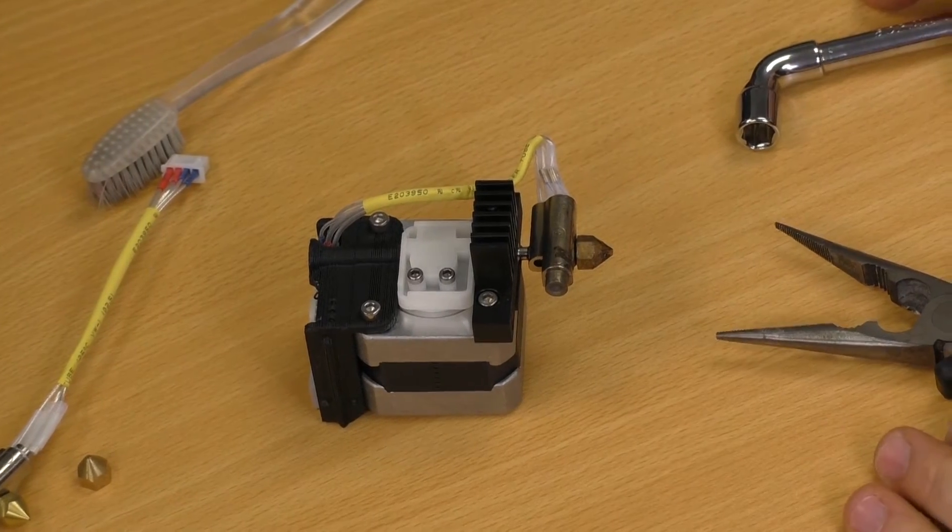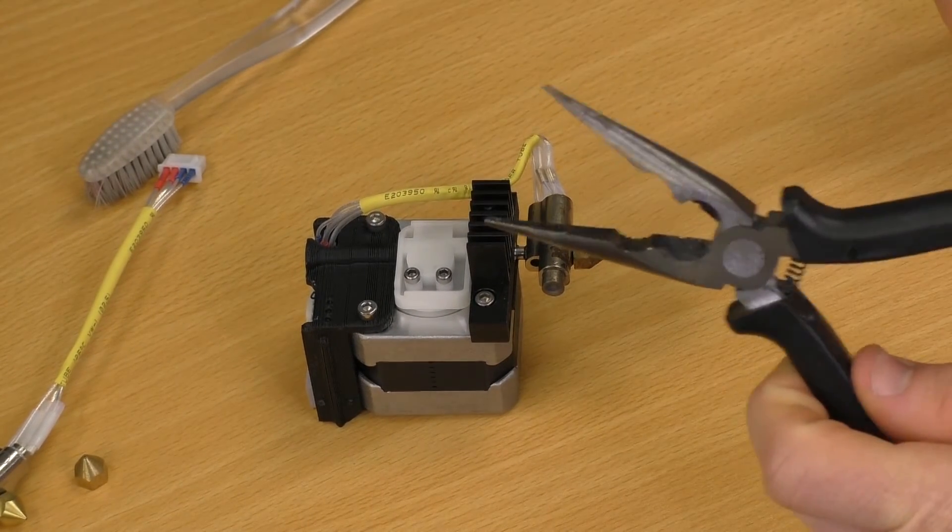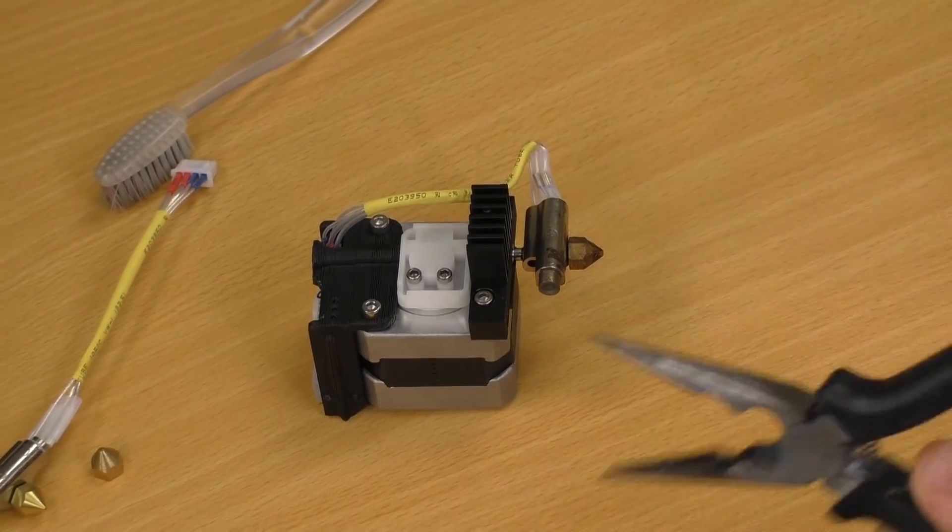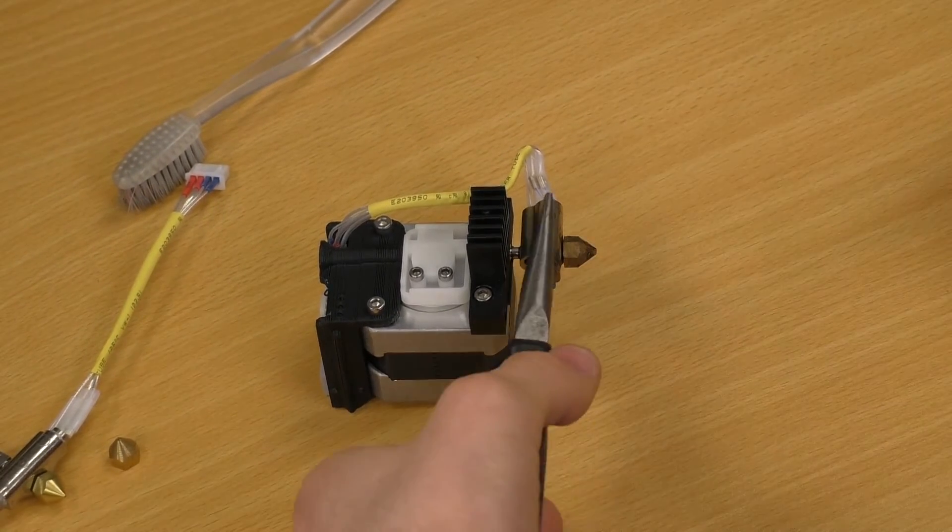Now while our nozzle is still hot, we need these two tools. So we need a pair of pliers and we'll need the nozzle spanner that came with your printer to take that nozzle off. So our nozzle is still pretty hot, we've only just taken it out of the printer.